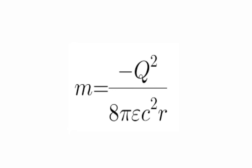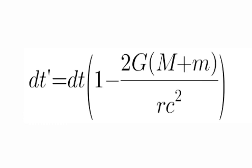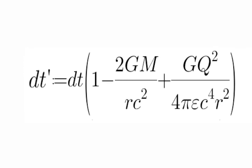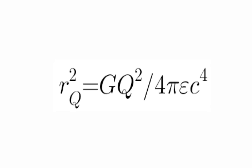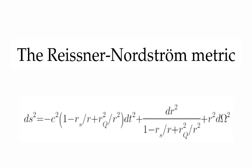We know that the Schwarzschild solution depends on the total mass, so instead of writing only capital M we add the small m to account for the additional gravitational field from the electric field energy. We substitute the value of small m derived earlier and get this equation. For simplicity we replace the independent term by this expression, and our Reissner-Nordström metric is derived. It is this equation.